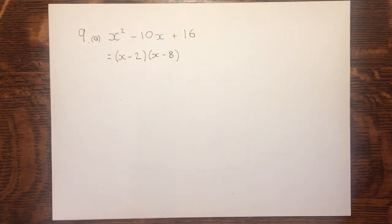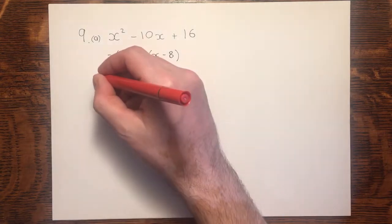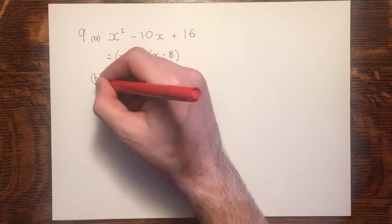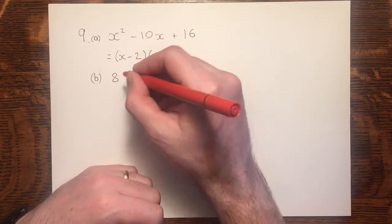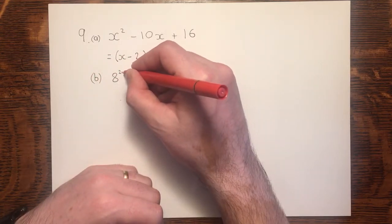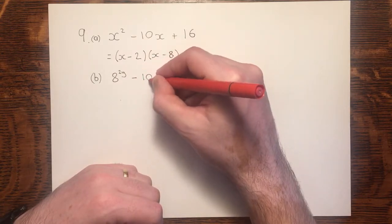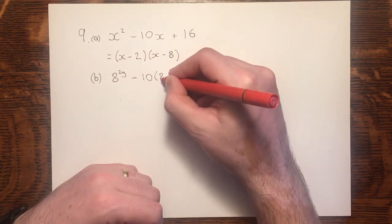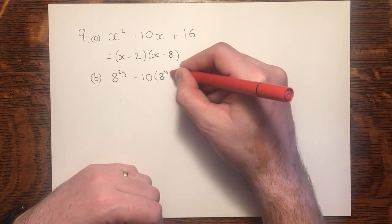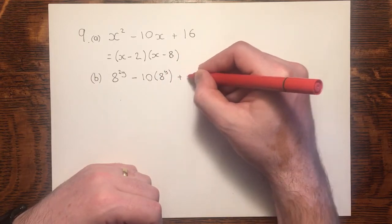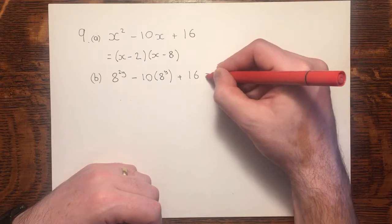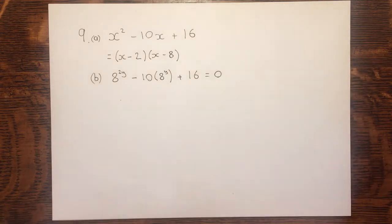In part B, we're asked to do a little bit more. We are asked to solve a more complicated expression, or rather a more complicated equation, that's given as this.